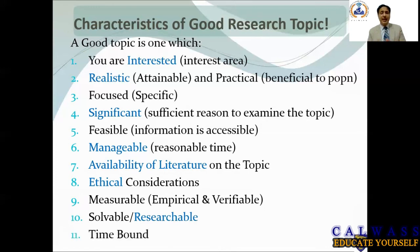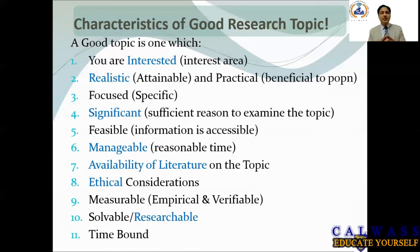The last but not least is that it should be time-bound — whether you will be able to finish that topic within a certain time frame. Is it achievable? Every research project has a duration, so you need to consider whether you will be able to finish it in time. So these are the 11 characteristics to consider while selecting any research topic: interest area, realistic, focused, significant, feasible, manageable, literature available, ethical consideration, measurable, researchable, and time-bound. If all these are met, you are good to go ahead.